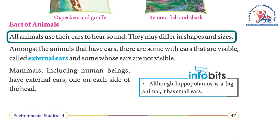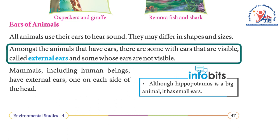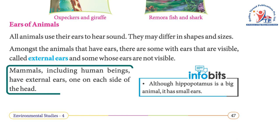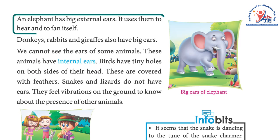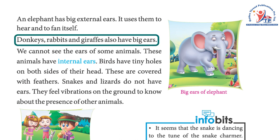All animals use their ears to hear sound. They may differ in shape and size. Among animals that have ears, some have visible ears called external ears, and some have ears that are not visible. Mammals, including human beings, have external ears — one on each side of the head. Although the hippopotamus is a big animal, it has small ears. An elephant has big external ears, which it uses to hear and to fan itself.